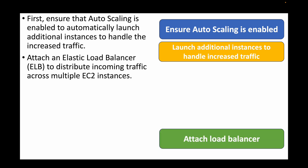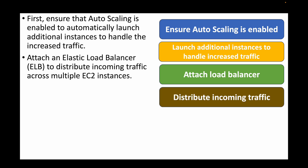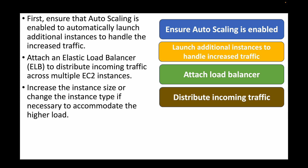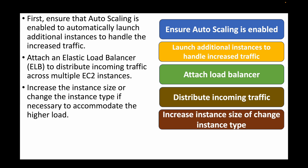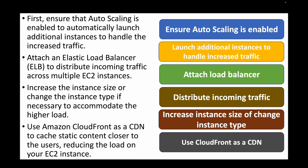We can also attach the EC2 instances behind a load balancer, which will help distribute incoming traffic across multiple EC2 instances. We can also consider increasing the instance size or changing the instance type — for example, if you're currently using t2.medium you can change it to t2.large to accommodate the higher load. We can also make use of CloudFront as a content delivery network to cache data closer to users and reduce the load on EC2 instances.